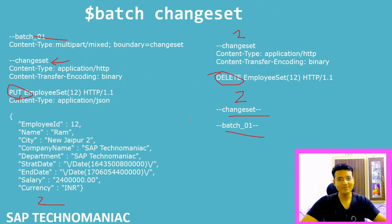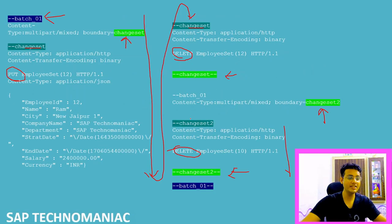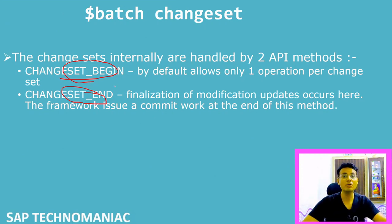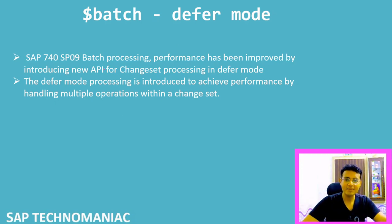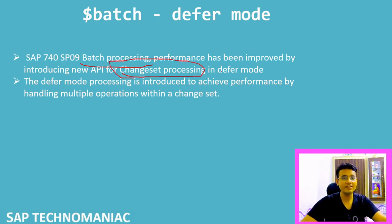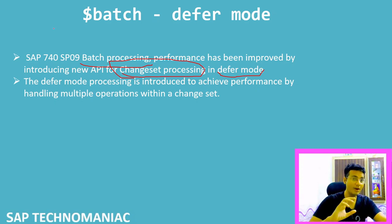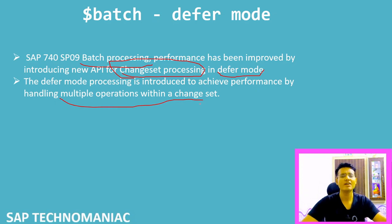Now let's talk about defer mode. In my last video I showed two methods — Change Set Begin and Change Set End — because my system version was below 7.4 Support Package 9. For systems with version 7.4 Support Package 9 and above, there is one extra method called Change Set Process. Batch processing performance has been improved by introducing this enhanced change set processing. This defer mode is what an interviewer might ask about — it is a different processing mode introduced to achieve better performance when handling multiple operations within a change set.